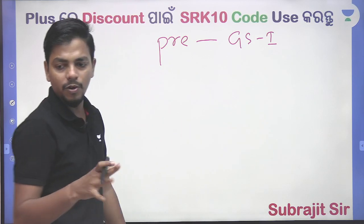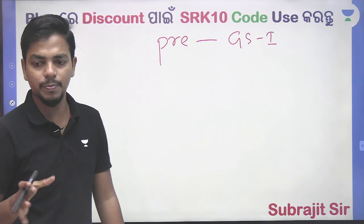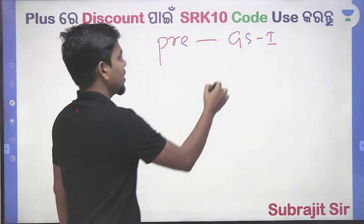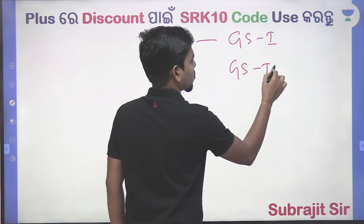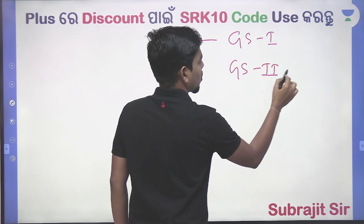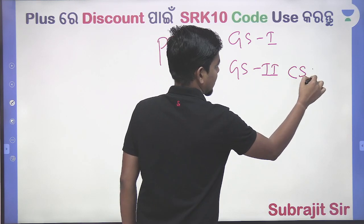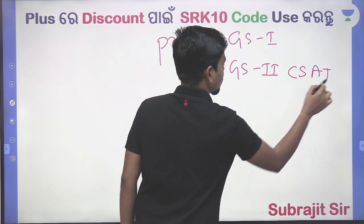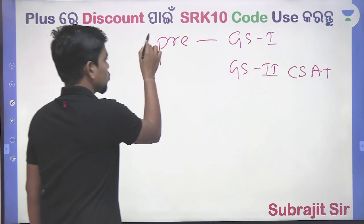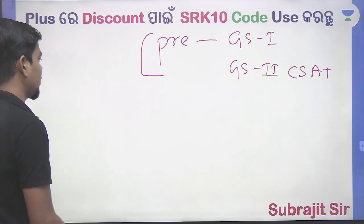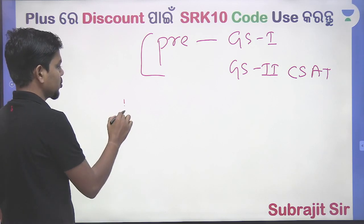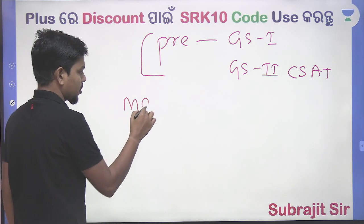GS Paper 1 covers history, geography, politics, economics, and current affairs. GS Paper 2 is CSAT. For the prelim, what we have completed is the main component, plus an optional subject.